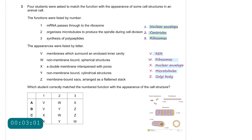The suggestions for point 1 are V or X. V — membranes surrounding an enclosed inner cavity — is incorrect because that describes the rough endoplasmic reticulum, which is continuous with the nuclear envelope. For X — a double membrane interspersed with pores — this definitely represents the nuclear envelope because the nuclear envelope has pores. So X is correct.